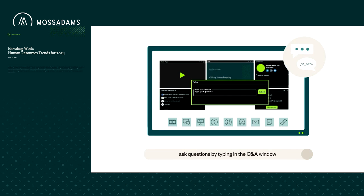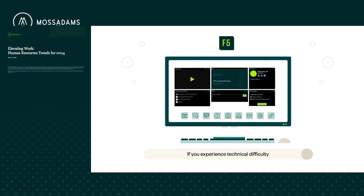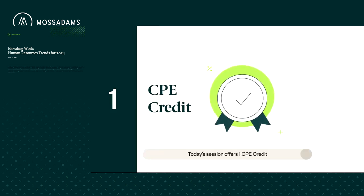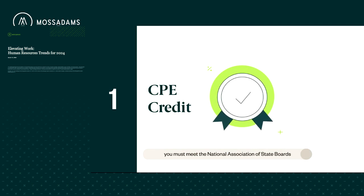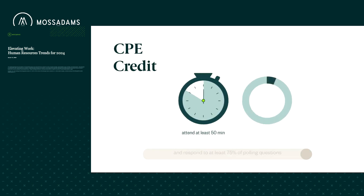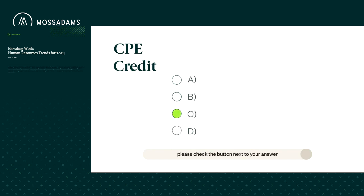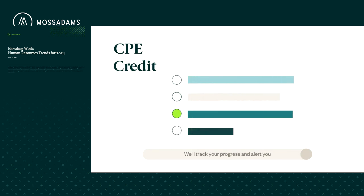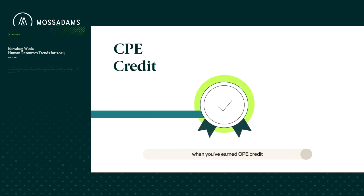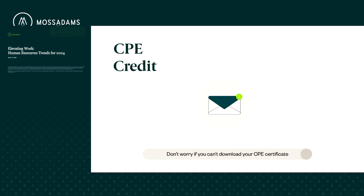You can ask questions by typing in the Q&A window and clicking submit. We'll do our best to answer all questions or follow up via email. If you experience technical difficulty, refresh your browser by hitting the F5 key. Today's session offers one CPE credit. To receive credit, you must meet the National Association of State Boards of Accountancy requirements. You must attend at least 50 minutes of the session and respond to at least 75% of polling questions. To participate in the polls, please check the button next to your answer within the slide window and click submit. We'll track your progress and alert you when you've earned CPE credit. You can then click the certificate icon in the CPE progress widget and download your CPE certificate. Don't worry if you can't download your CPE certificate today — we'll email you a copy in two weeks.